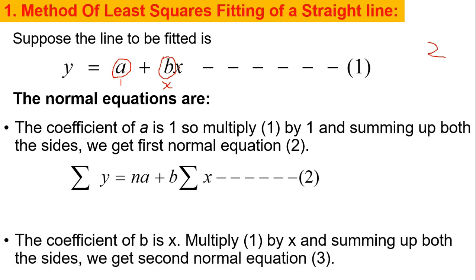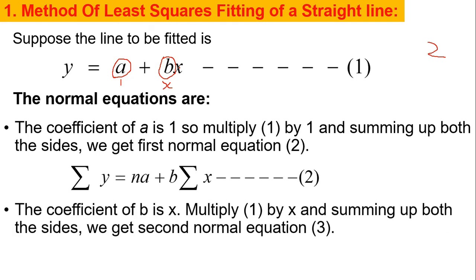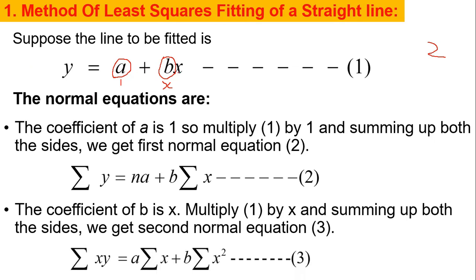The second normal equation is obtained by multiplying equation 1 by the coefficient of b, that is x. So it becomes xy = ax + bx². Taking summation: summation xy = a·summation x + b·summation x². This is the second normal equation.